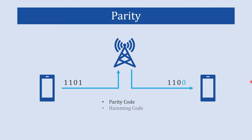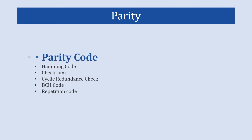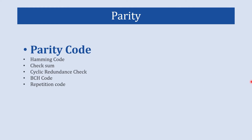Codes like parity code, Hamming code, checksum method, cyclic redundancy check, BCH code, and repetition code — these are various methods to detect error in data. Out of all these methods we are going to talk about parity code, because it is the simplest and the least expensive method for error detection.